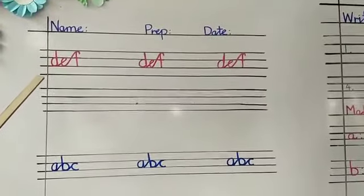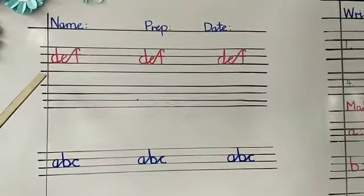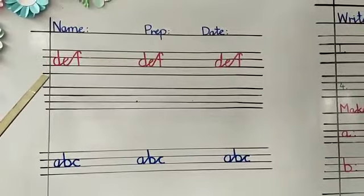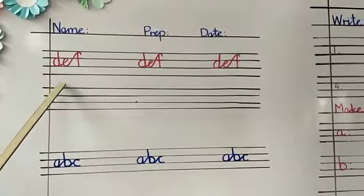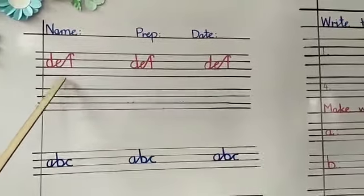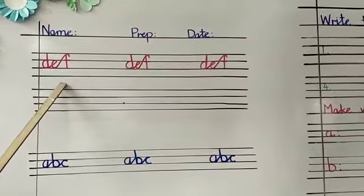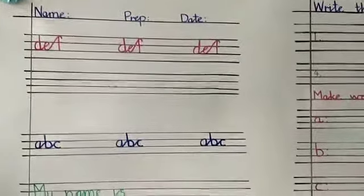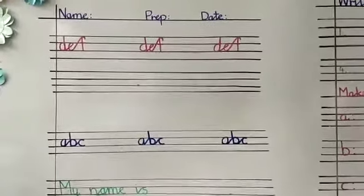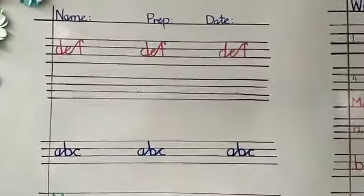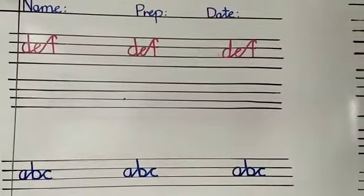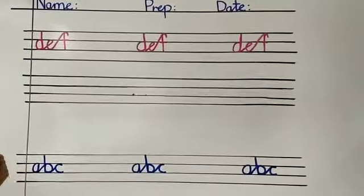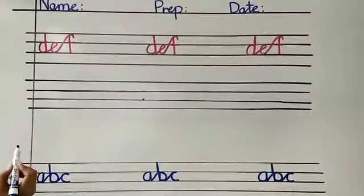Yesterday we have done the joining handwriting of A, B, C. Now we are going to write D, E, F in the joining handwriting. I know that you all can write yourself, but let's revise D, E, F. Are you ready?